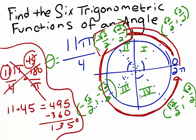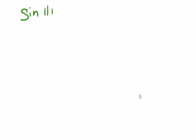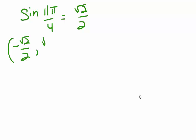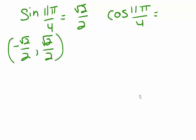Now we know the coordinates we need to use, it's time to find the values of the six trigonometric functions. Sine of 11 pi over 4 is equal to positive square root 2 over 2. That corresponds to the y coordinate of the ordered pair that we've identified as corresponding to 11 pi over 4. Cosine of 11 pi over 4 corresponds to our x coordinate, so it's negative square root 2 over 2.